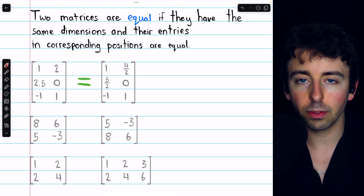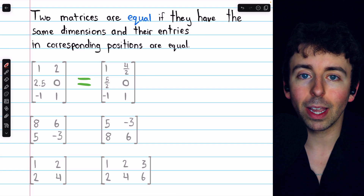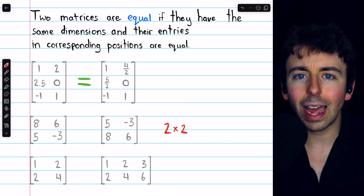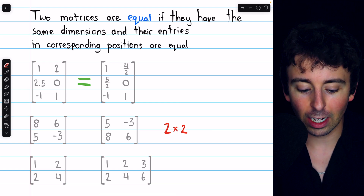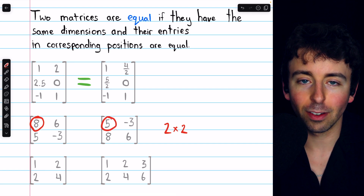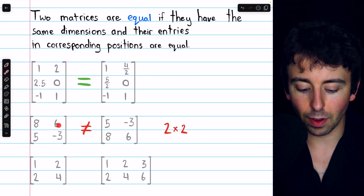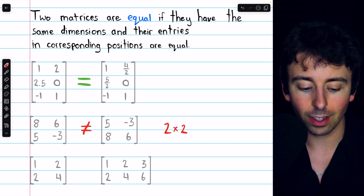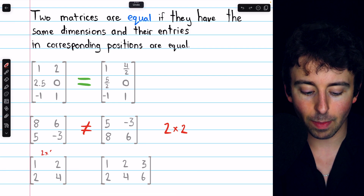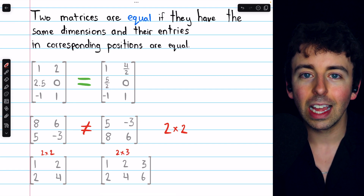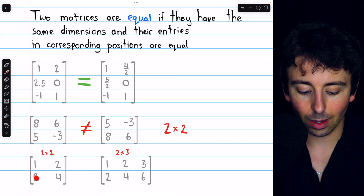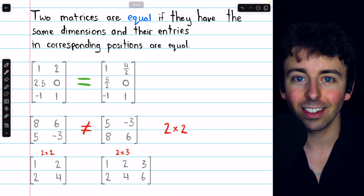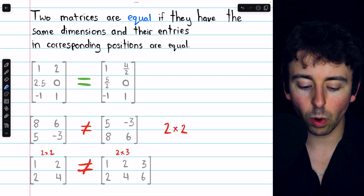What about these two matrices? They are both two-by-two square matrices, so their dimensions are the same. But checking entries: row one, column one has eight in one and five in the other. So already we know these matrices are not equal — in fact, none of their corresponding entries are the same. And what about this last pair? The matrix on the left is two-by-two, but the matrix on the right is two-by-three. Their dimensions are not the same, so these matrices cannot be equal regardless of their entries.